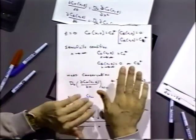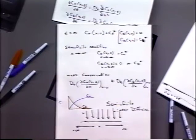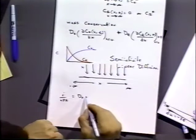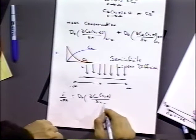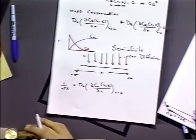Returning from our break: these semi-infinite linear diffusion conditions give us the concentration profiles with respect to distance X in solution and time of the experiment. Because current is an observable variable, we're also interested in solving equations for current based on Fick's first law — specifically the concentration gradient at the electrode surface.